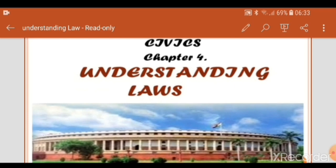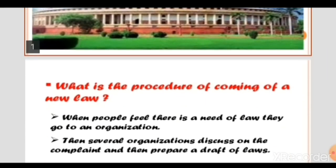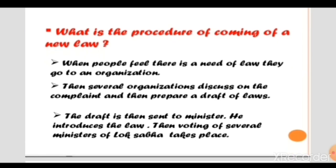Good morning class. Today I will continue Chapter 4 in Civics: Understanding Laws. In this chapter I have already explained about rule of law. Rule of law means that all laws apply equally to all citizens of the country, and no one can be above the law. I also explained how parliament makes a law when different communities and people face any problem — they come together, raise their voice, and make pressure on elected representatives, who then make a law in parliament for the people.